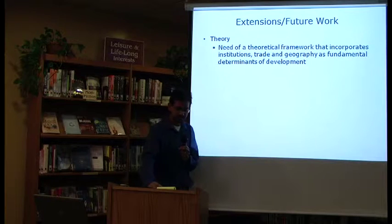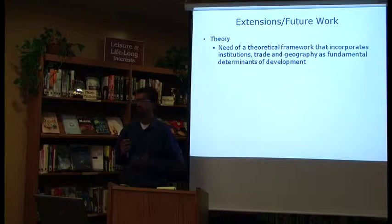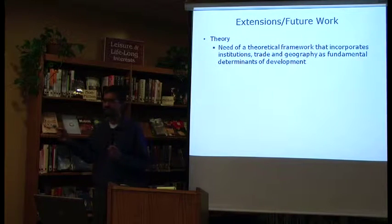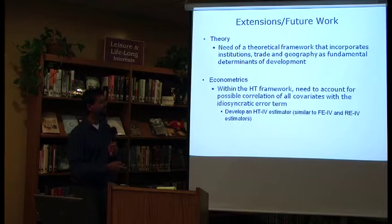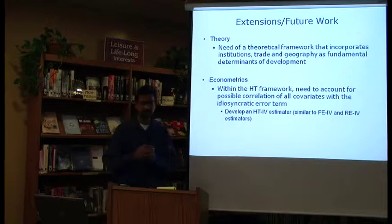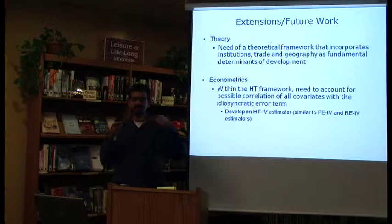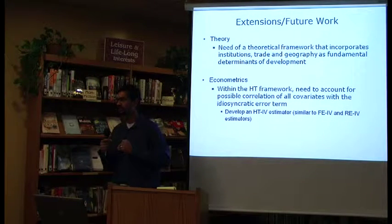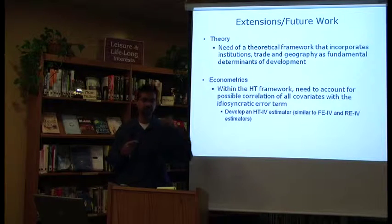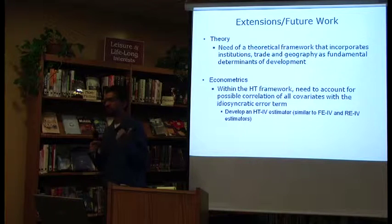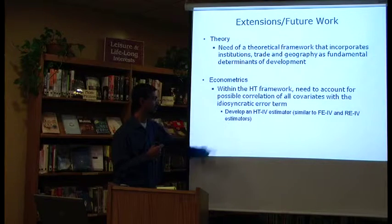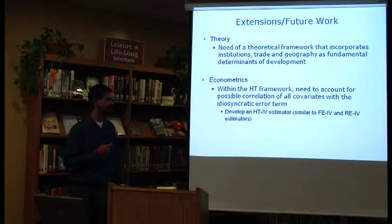There are some possible extensions. On the theory side, right now there are no theoretical models that specifically look at these three variables and model them. A second extension would be to have a better framework for breaking the link between causation and correlation. The Hausman-Taylor model as specified cannot incorporate a third variable to break that link, and I'm working on developing an estimator that would work with that framework. We'll test it in the summer and see if we can get it out.